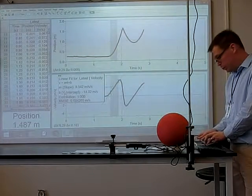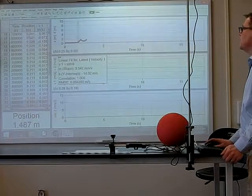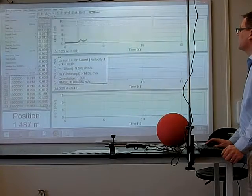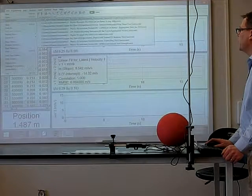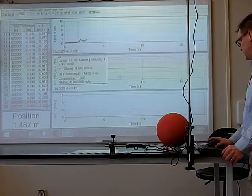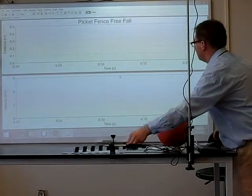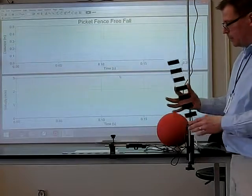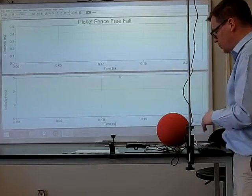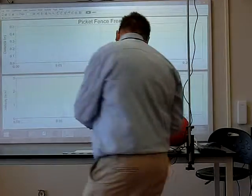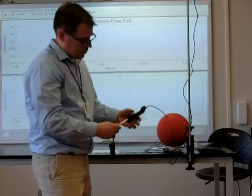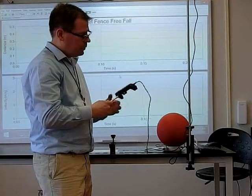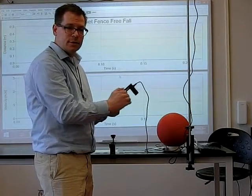So what I'd like to do is I'd like to show you another piece of technology that we can actually use to explore this even further. I'm going to go ahead and open up a different file here that allows us to look at something called a picket fence. And the picket fence is a piece of plastic that has clear spots and black stripes on it. And it's used with a piece of technology that we've talked about before and used before called a photo gate.